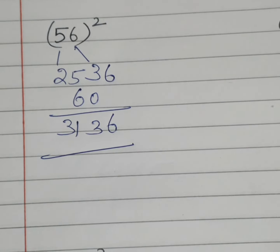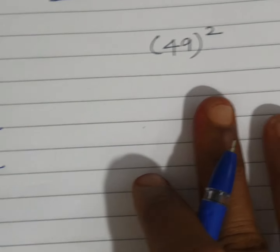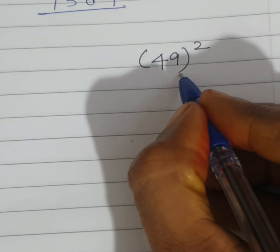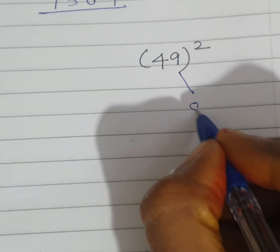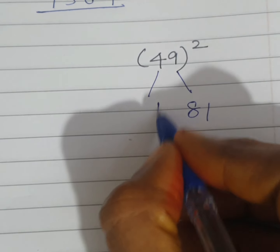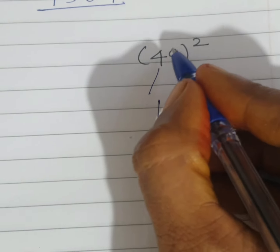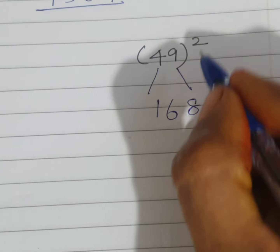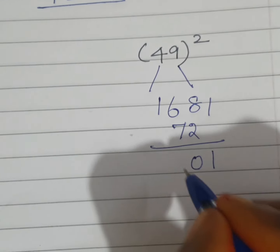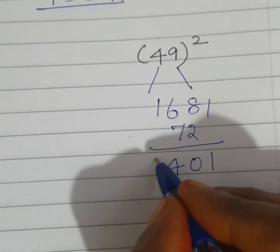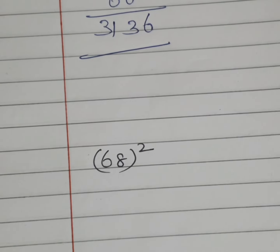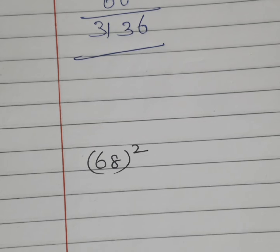Very quickly you will get the answer. One more example: 49 square. 9 square is 81, 4 square is 16, 4 into 9 is 36 into 2 is 72. The answer is 2401.